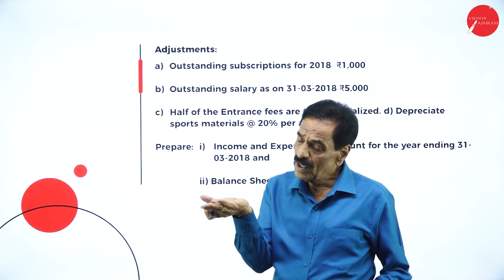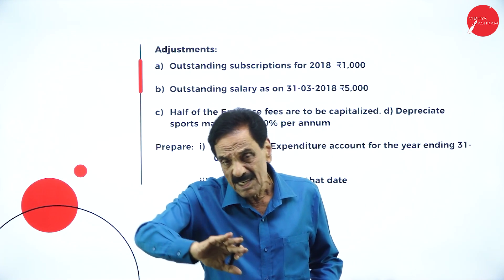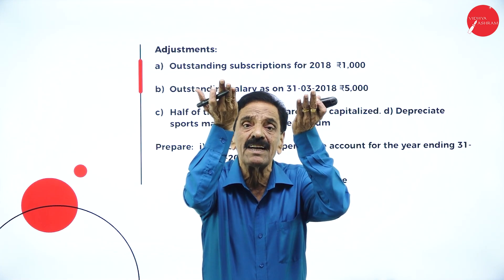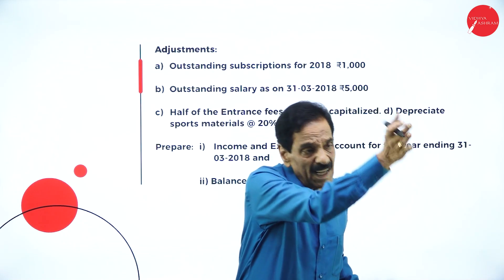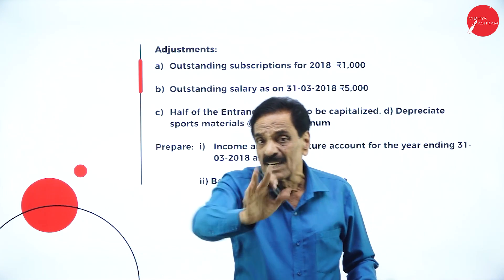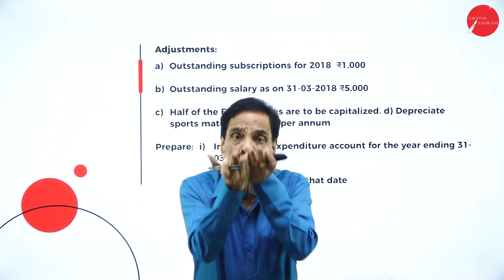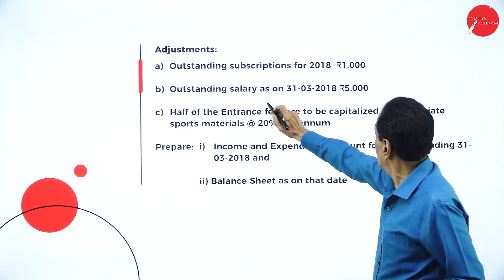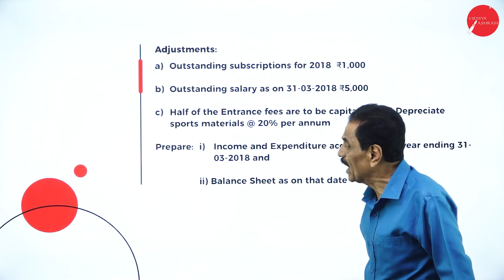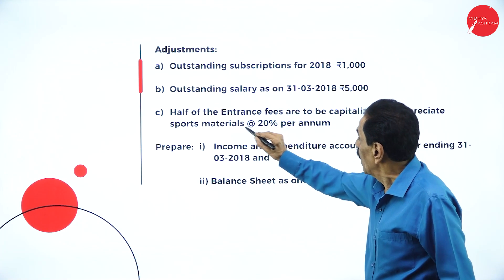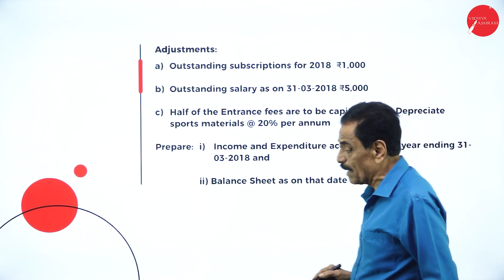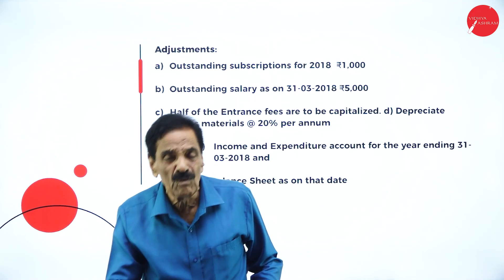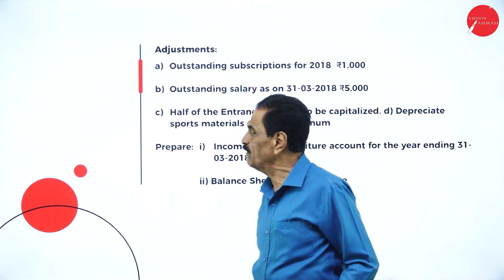Deduct last year's subscription, deduct next year's subscription, add outstanding current year's subscription. Outstanding salaries should be added to salary. Half of the entrance fee has to be capitalized — meaning half should be treated as revenue and half should be added to capital fund.